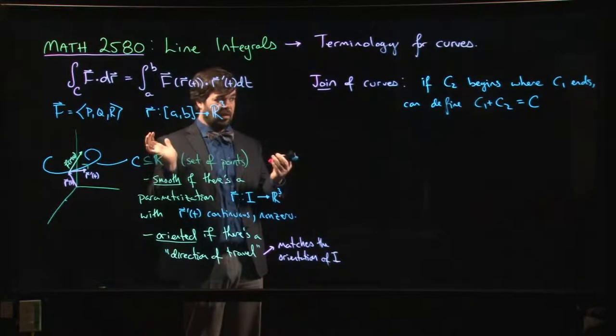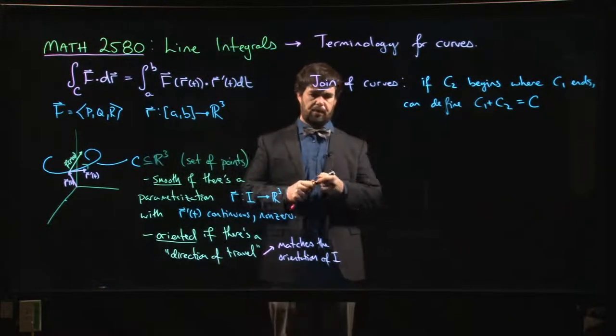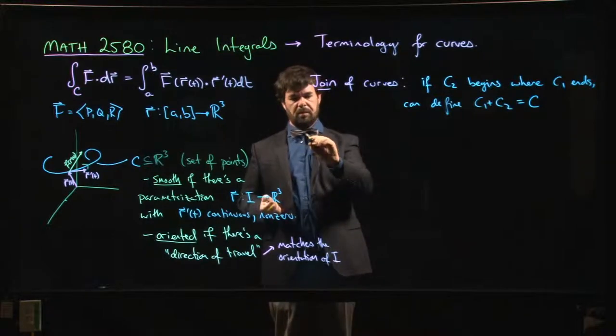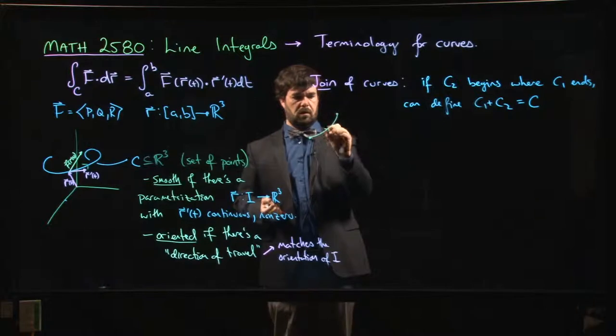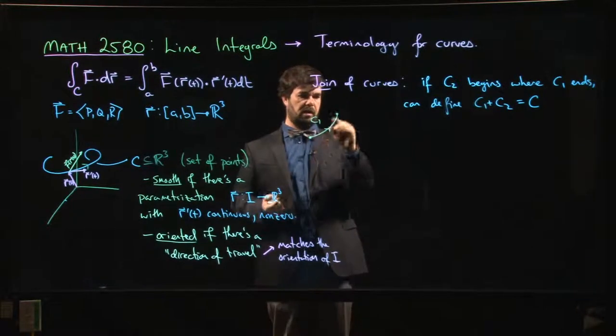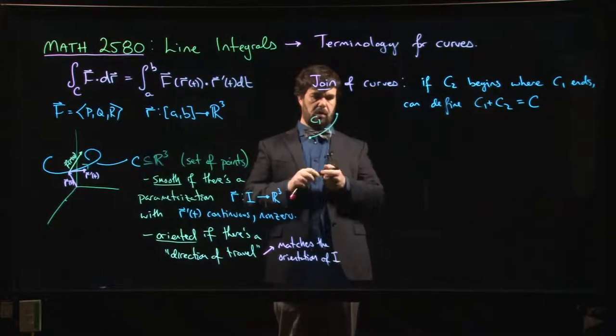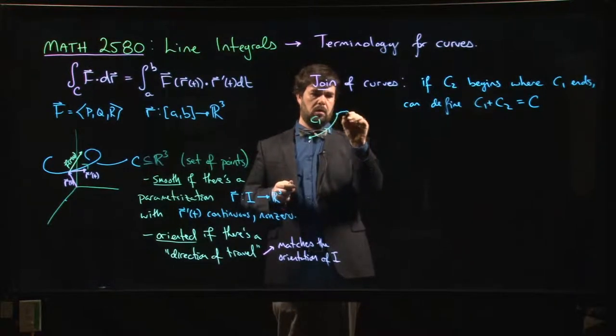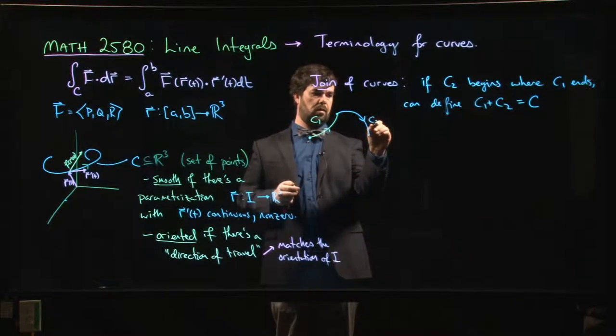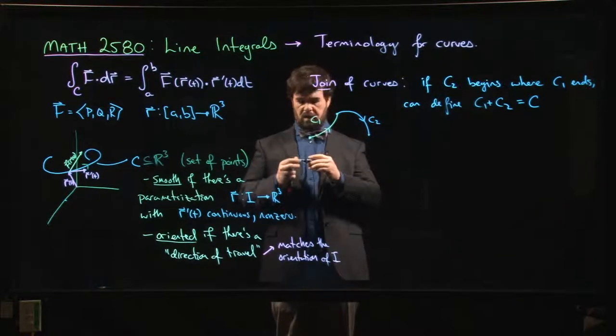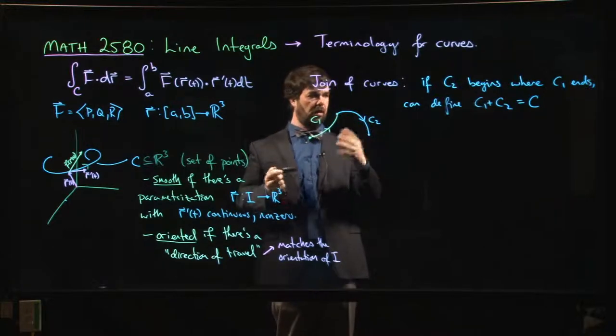So the idea here is—so the picture might be something like this: you've got your curve C1, oriented going this way, followed by some other curve, so here's your C2. And so the whole thing taken together as a single curve would be this curve C, which would be C1 + C2.